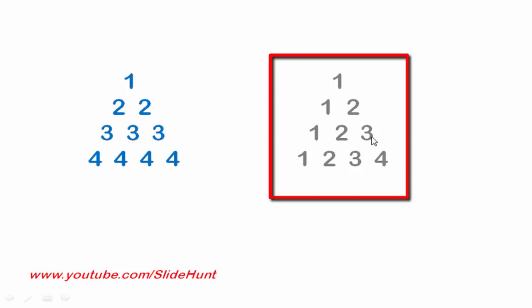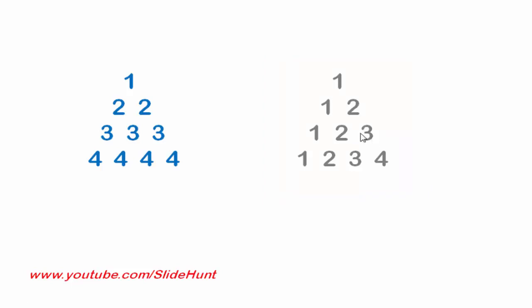Now we try to produce the second format. Comparing it with the first, all things are the same. The only difference is: in the first format, numbers printed in each row are all equal to the current row number. But in the second format, numbers in each row start from one and go up to the current row number. For the first row it prints one, for the second row it starts from one and goes up to two, for the third row one up to three, and so on.